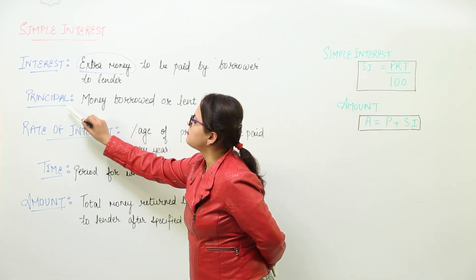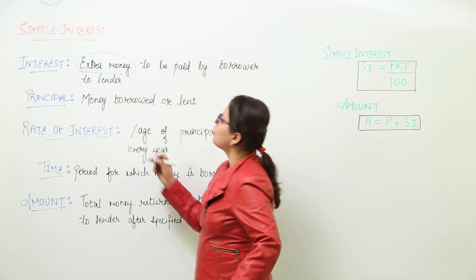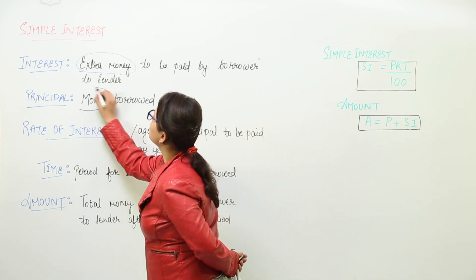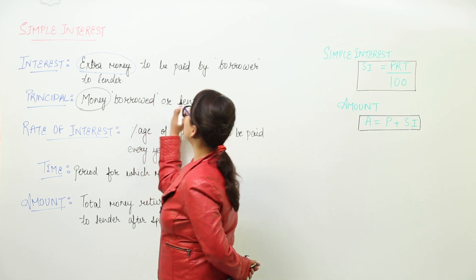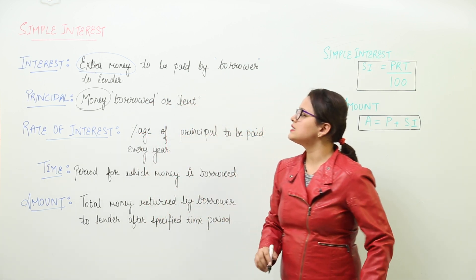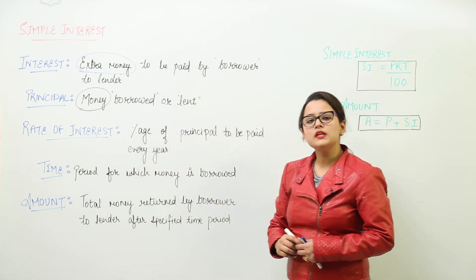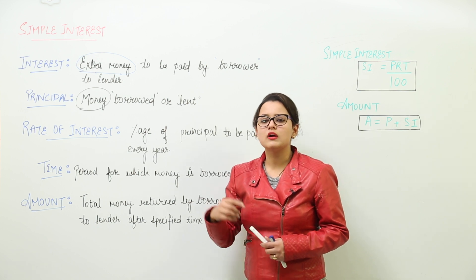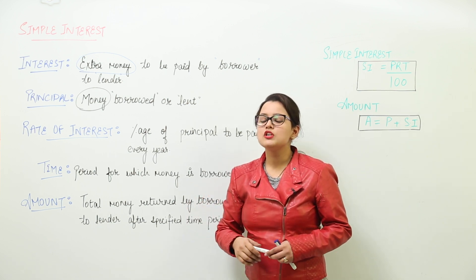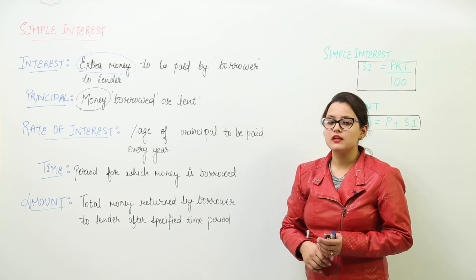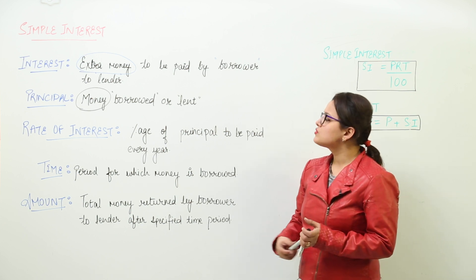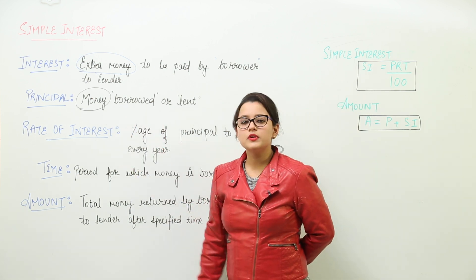So next is the principal. The amount of money borrowed or lent. The money that has been borrowed or lent represents the principal. How much money did I borrow from my friend or how much money did she lend me? She lent me 100 rupees, and so I have borrowed 100 rupees. So 100 rupees represents my principal.